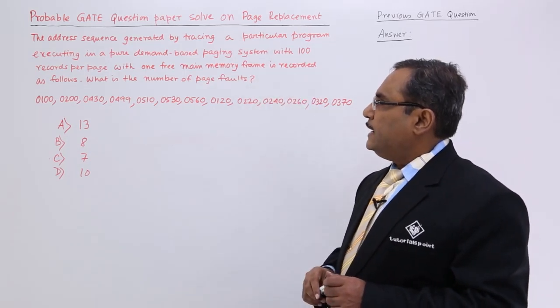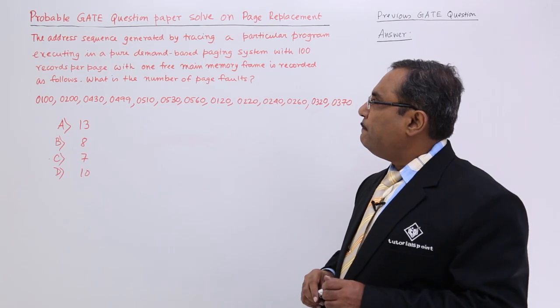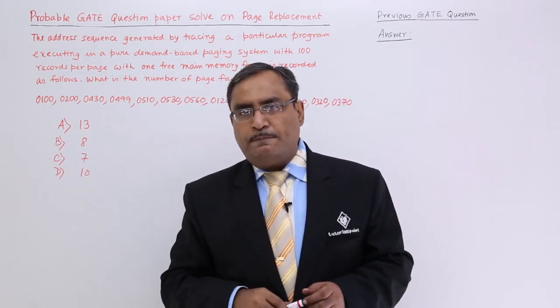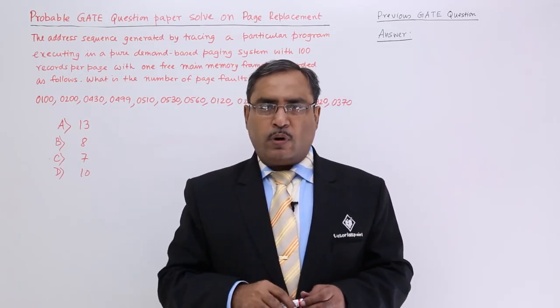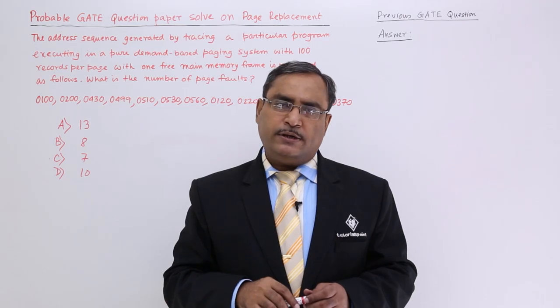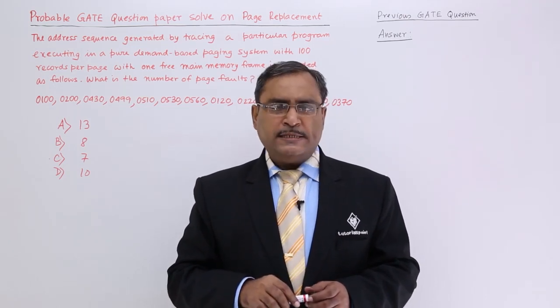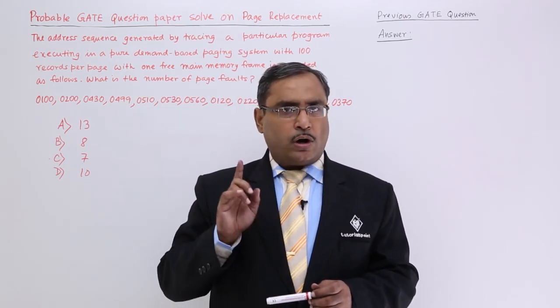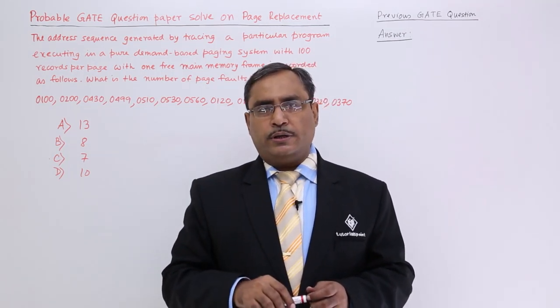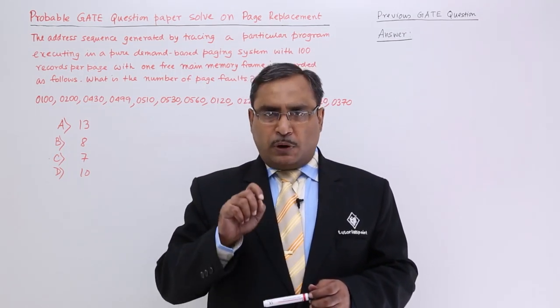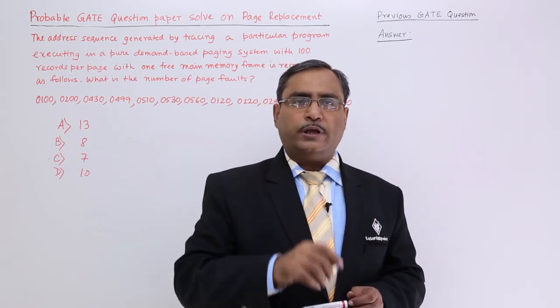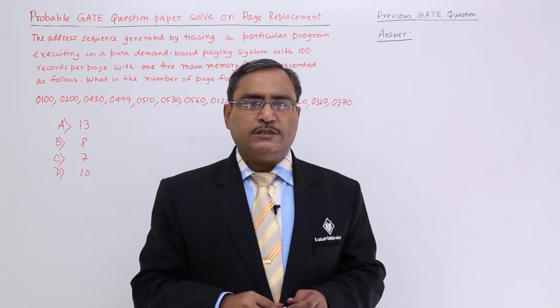The address sequence is generated by executing in a pure demand based paging system. What is the meaning of demand paging? Actually, we have two types of paging: demand paging and anticipatory paging or prepaging. Demand paging means let the page fault occur, then we shall load the desired page in the computer's memory. Page fault will occur and that is the basic criteria for loading a page onto memory. That is known as demand paging.